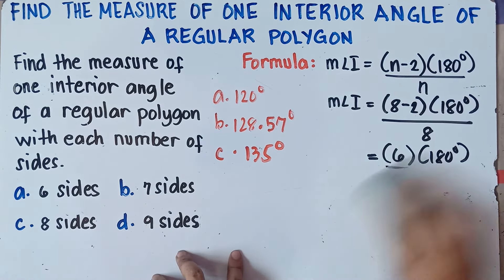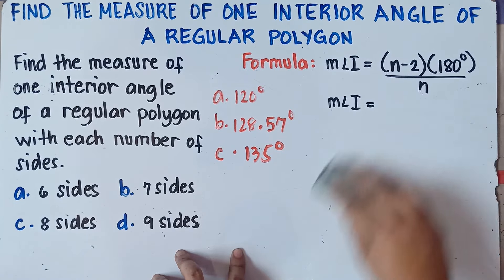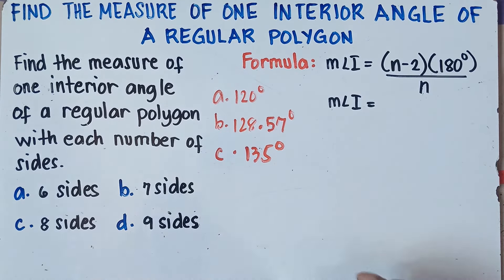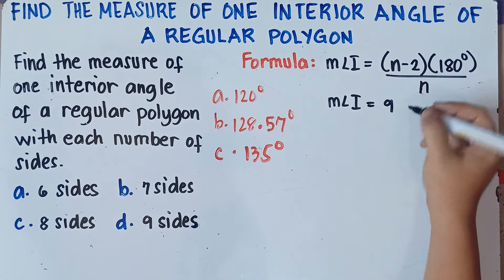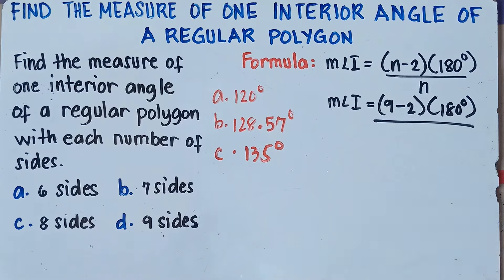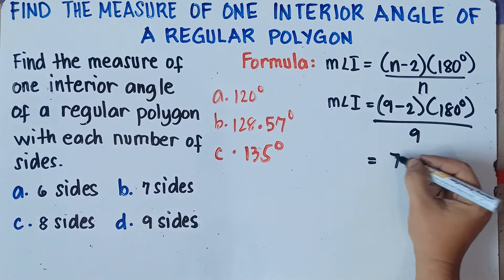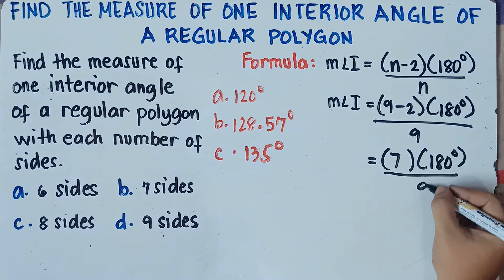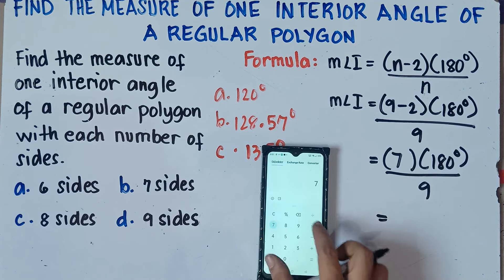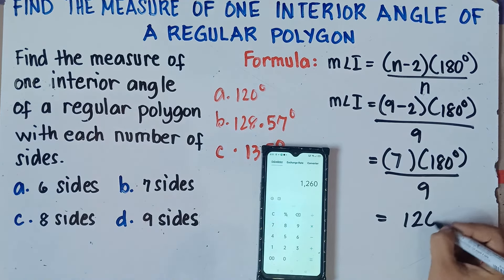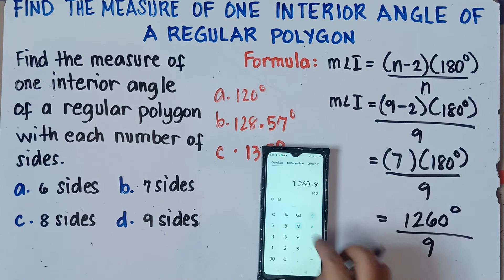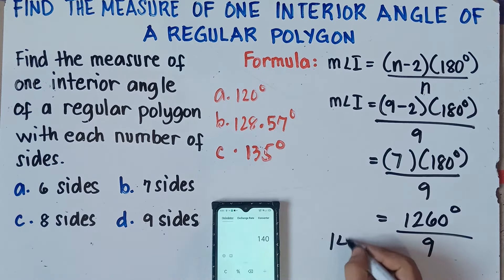Last one, letter D. I hope you're still with me. If you have questions, feel free to leave a comment below or message me on our Facebook channel. For 9 sides, n equals 9. Substitute: (9 minus 2) times 180 degrees, over 9. So 9 minus 2 is 7, times 180 degrees, divide by 9. 7 times 180 equals 1,260 degrees, divided by 9 gives us 140 degrees.